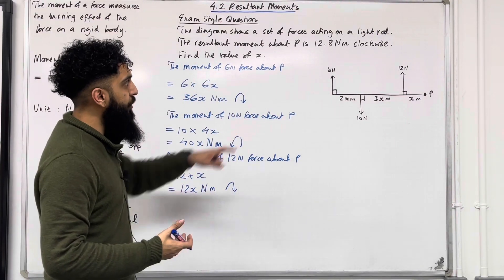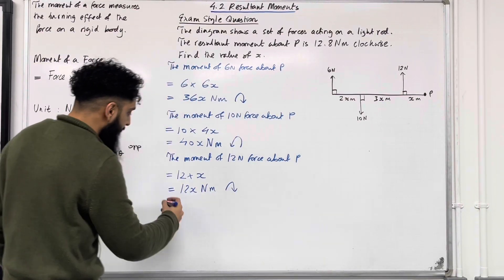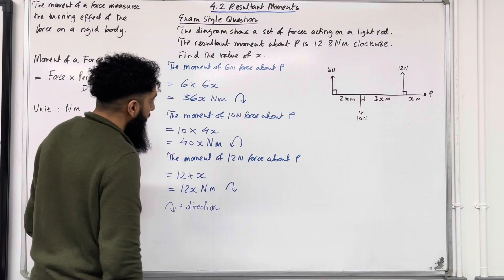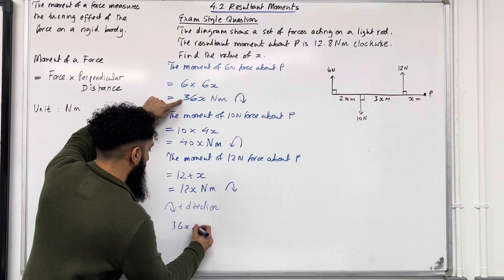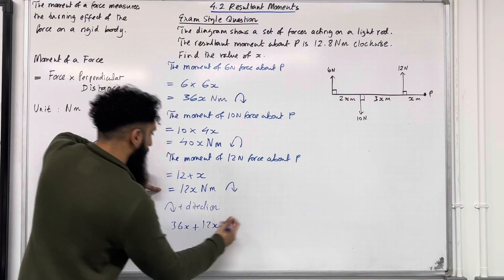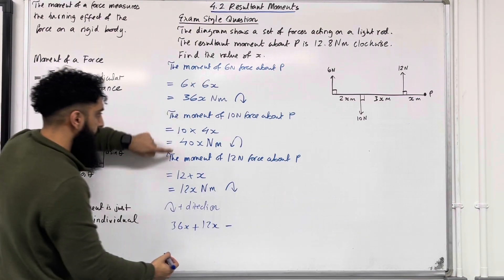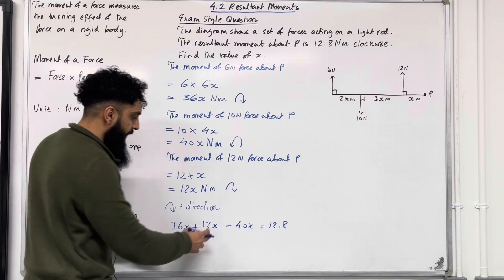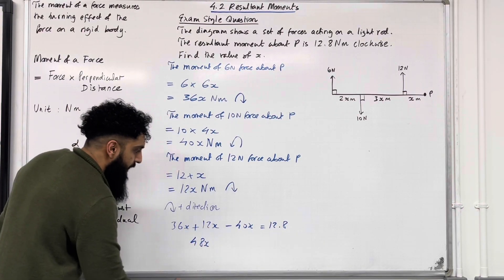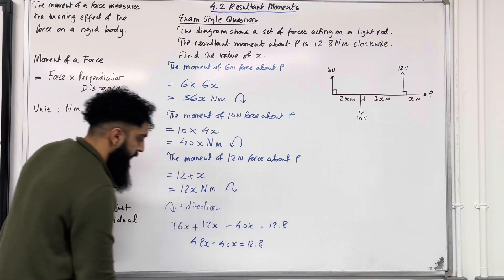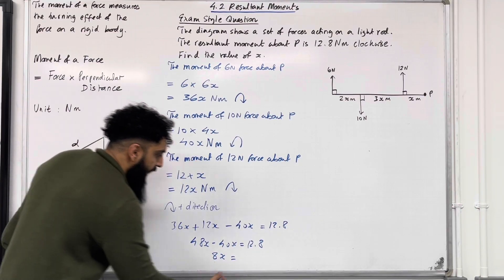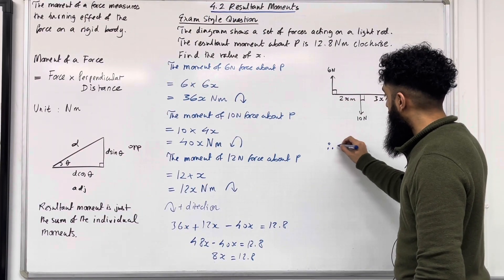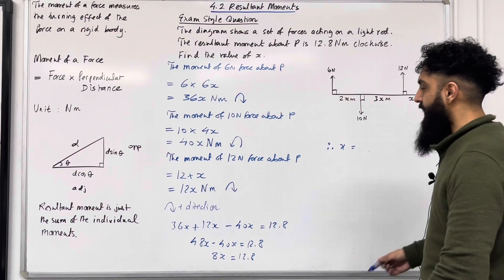The resultant moment is 12.8 Newton meters clockwise, so clockwise is the positive direction. Therefore, the resultant moment equals 36x plus 12x minus 40x, and this must equal 12.8. Simplifying: 36x plus 12x is 48x, so 48x minus 40x equals 12.8, giving 8x equals 12.8. Therefore x equals 12.8 divided by 8, which gives x equals 1.6.